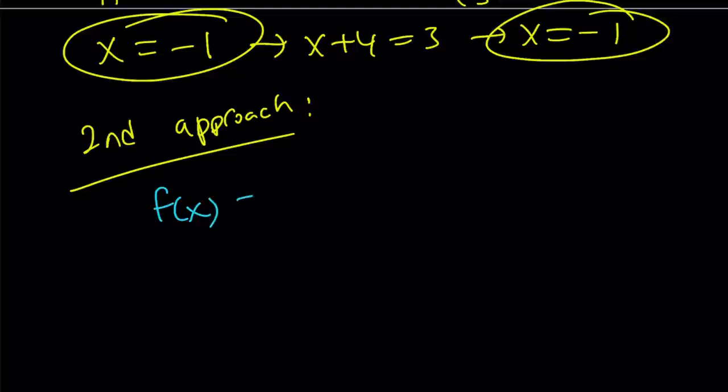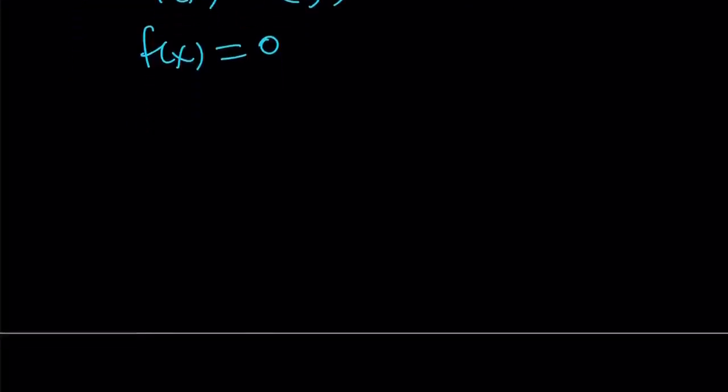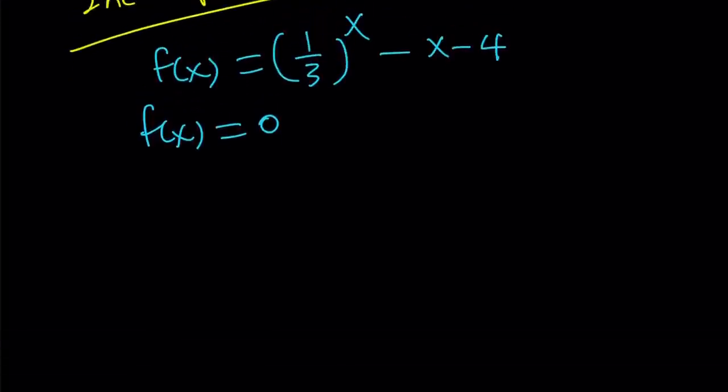I'm going to put everything on the same side and turn it into a single function. Since I'm solving for my original equation, I want to find the values for which f of x is equal to 0. In other words, I'm looking for the x-intercept. Now let's go ahead and look at it from a calculus perspective. I'm going to go ahead and differentiate this function.